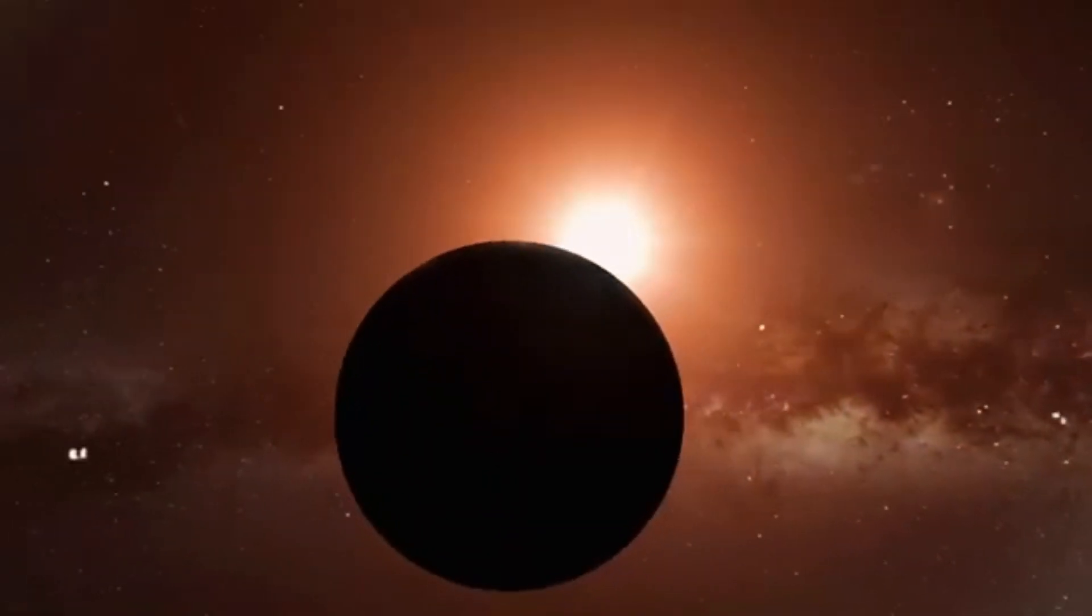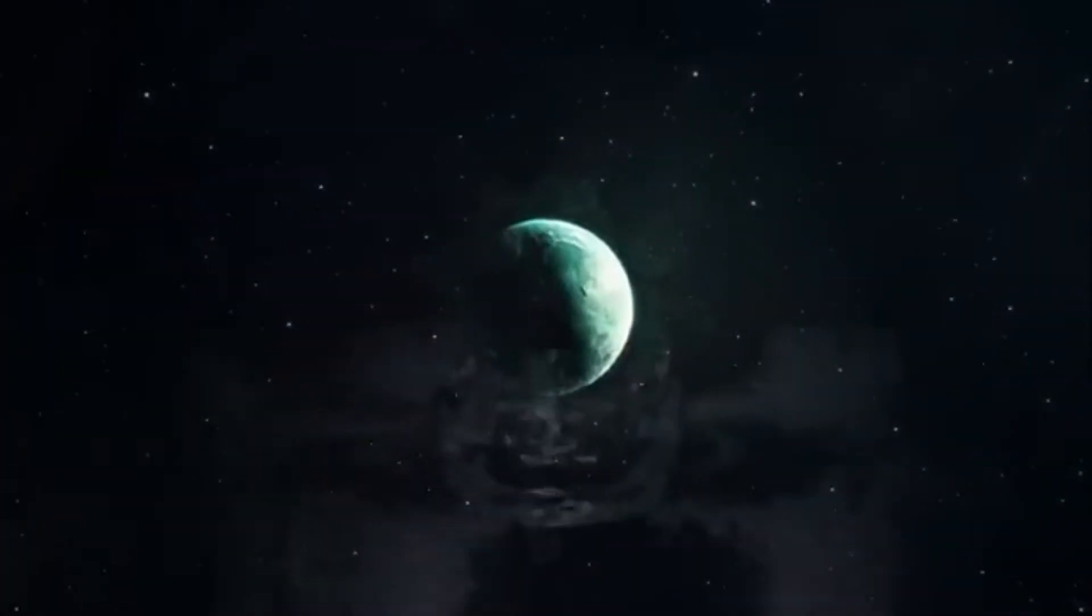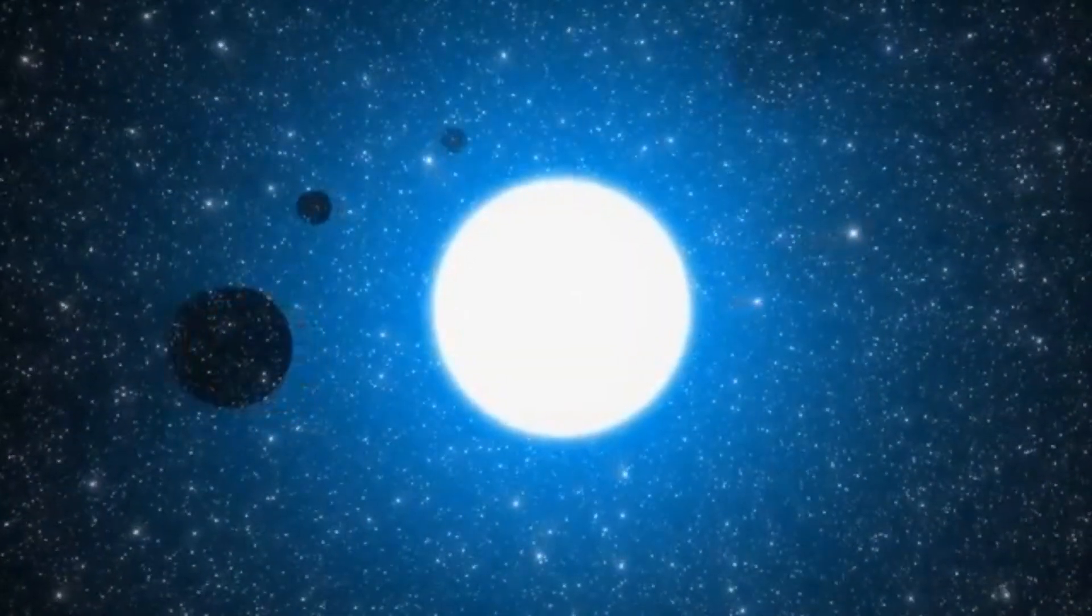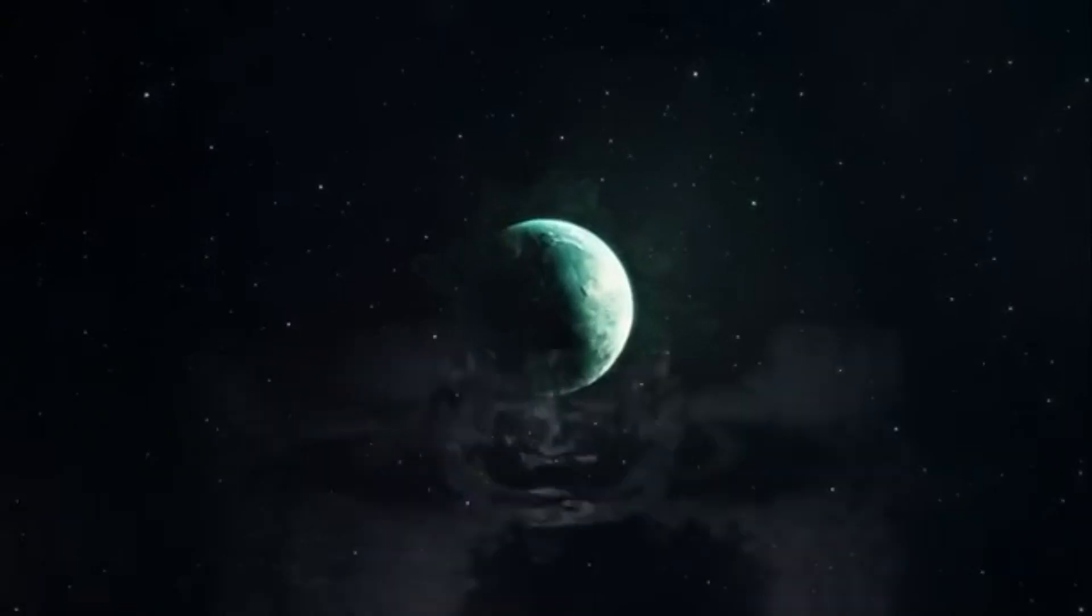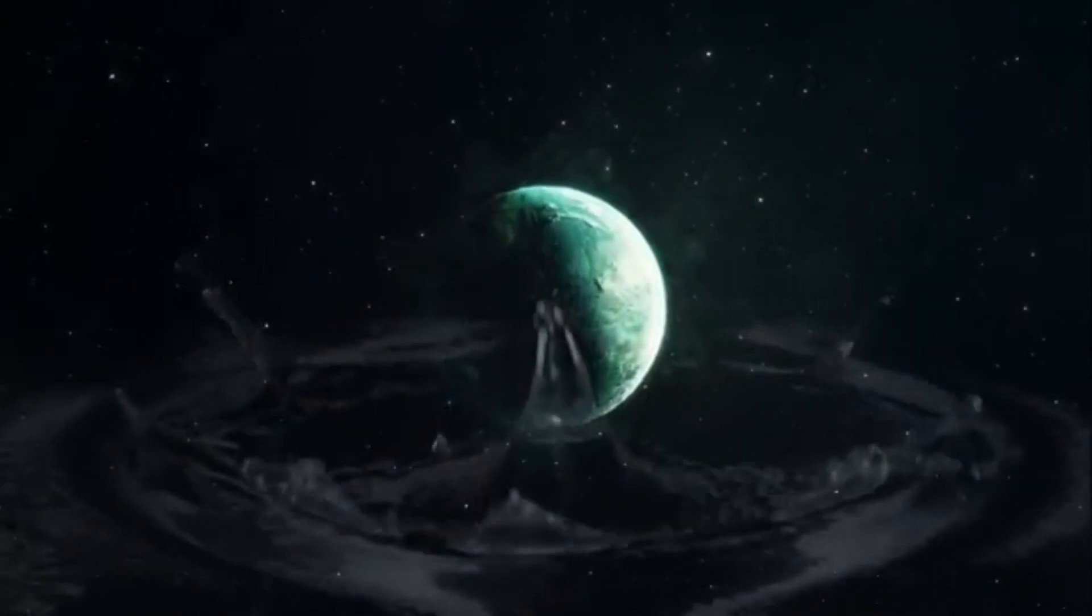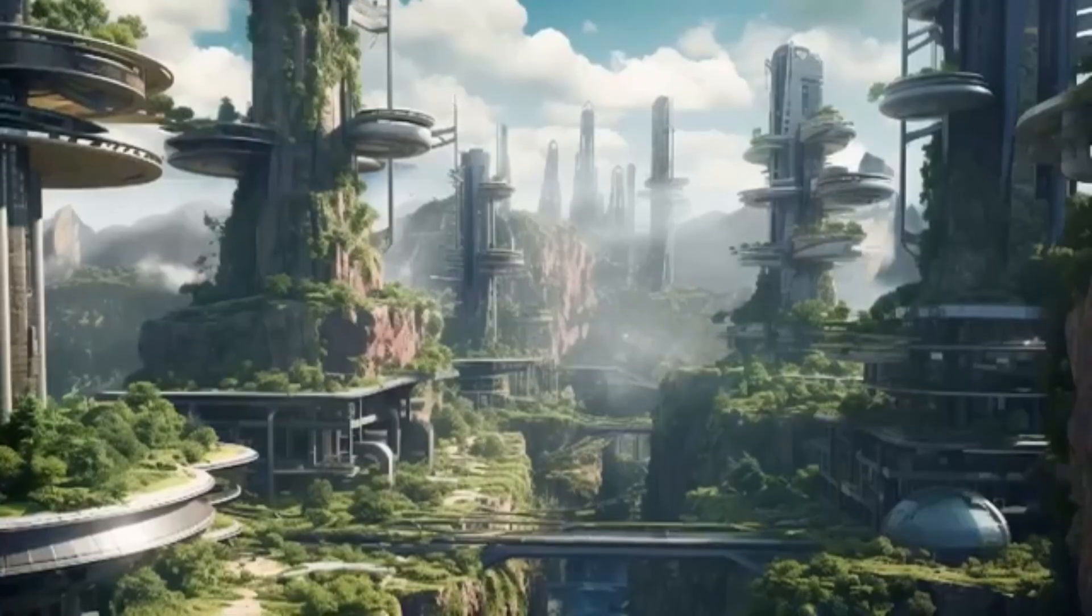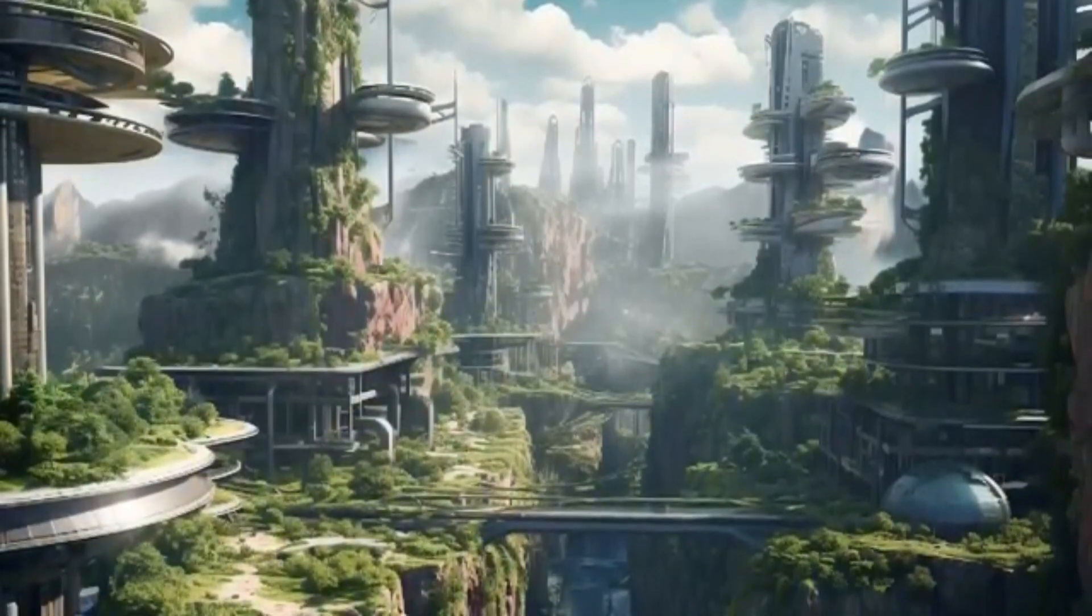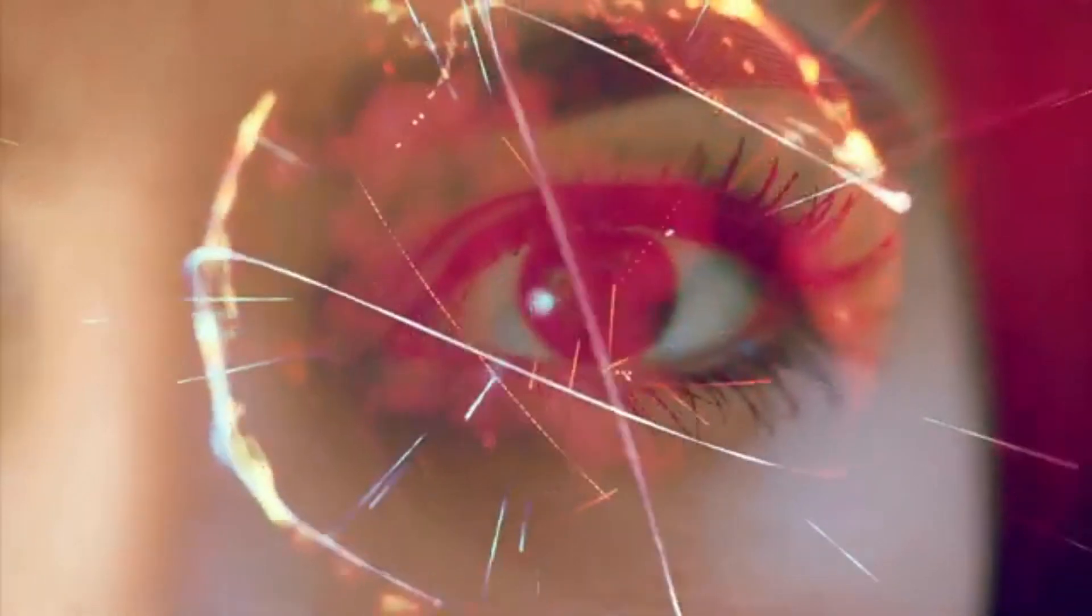Proxima Centauri b has long been a subject of intrigue, given its status as the closest exoplanet to our solar system. Orbiting Proxima Centauri, the smallest and faintest star in the Alpha Centauri star system, this planet is thought to lie within its star's habitable zone, the region around a star where conditions might be right for liquid water and potentially life to exist. Given this proximity and its position in the habitable zone, Proxima Centauri b has been one of the primary targets in the search for extraterrestrial life. However, detecting signs of life on such distant worlds has always been an immense challenge, until now.